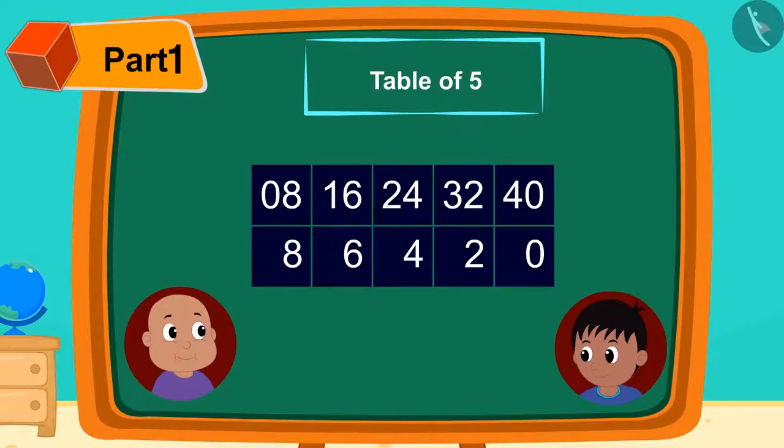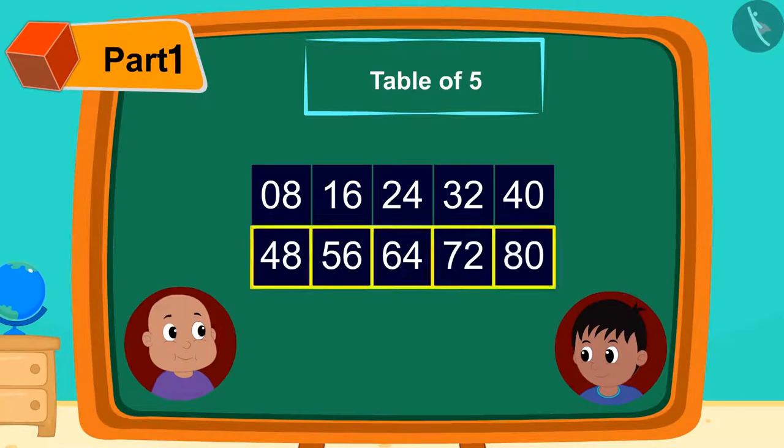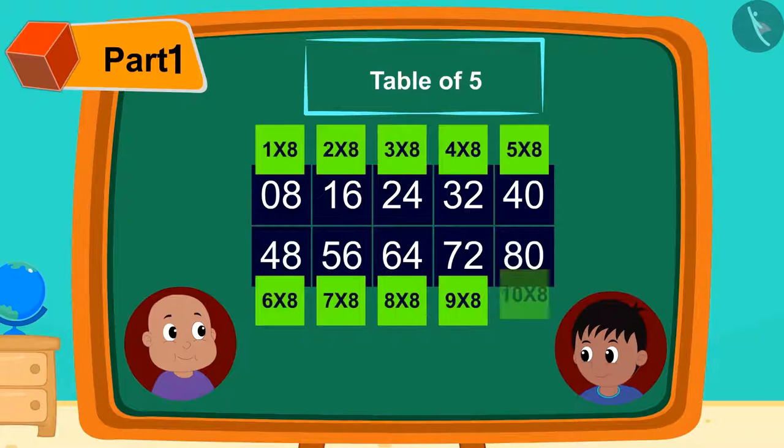Then in front of the digits written in the second line, he wrote 4, 5, 6, 7, 8 in this way. And the table of 8 was ready.